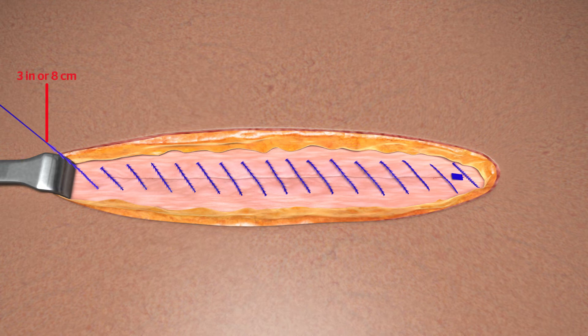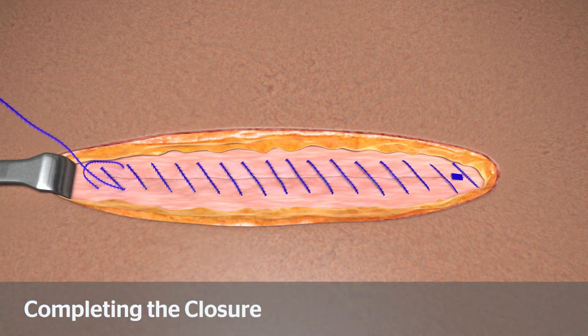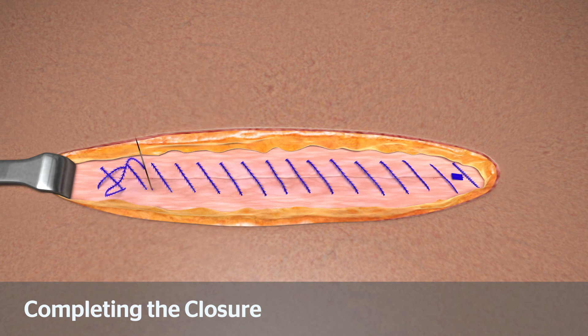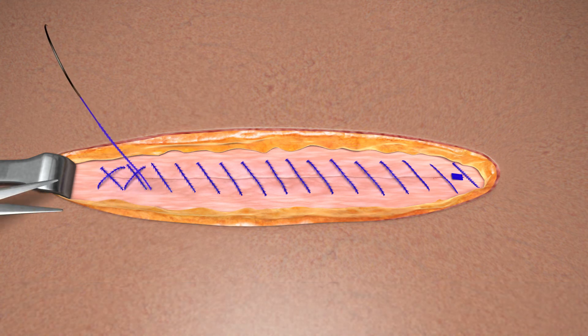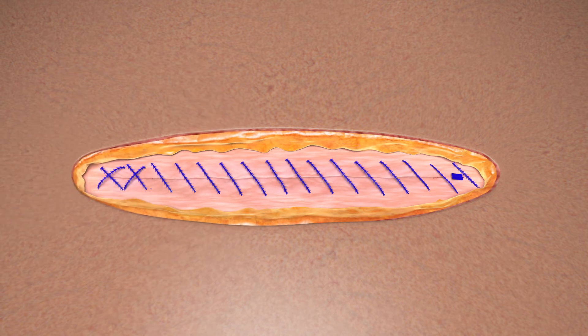Retain approximately three inches or eight centimeters of the device for completing reverse stitching to secure the terminal end. To complete and secure the closure take two passes in the reverse direction across the incision. Then gently pull on the free end of the device and cut flush with the surface of the tissue. Closure is now complete.